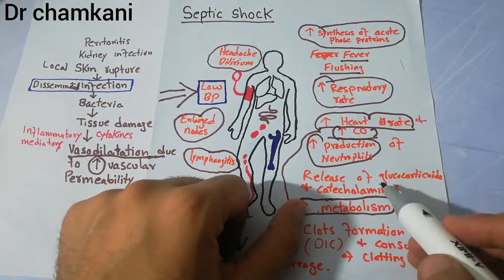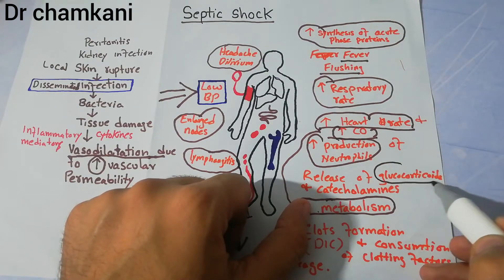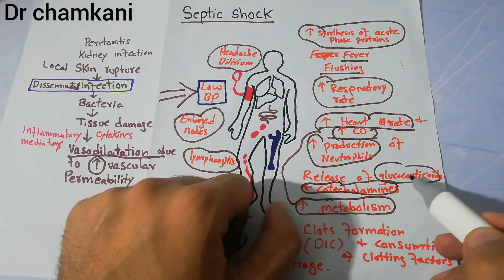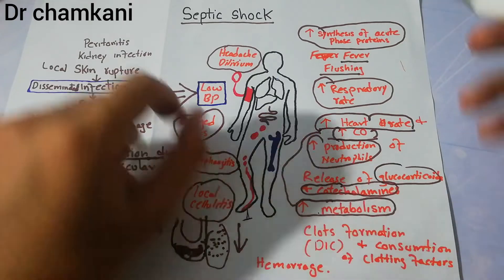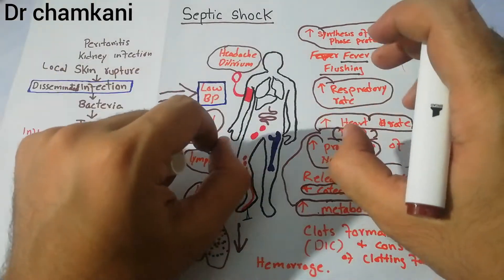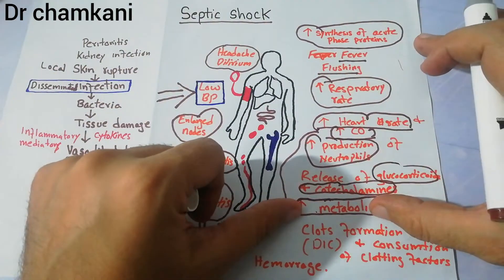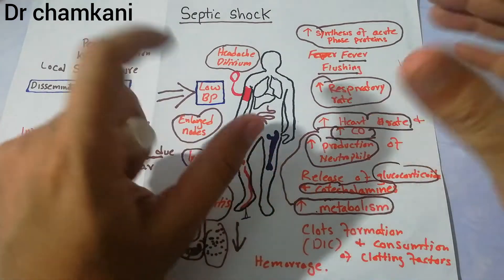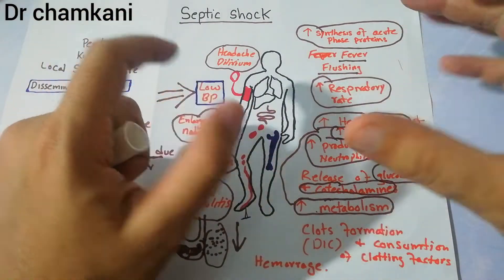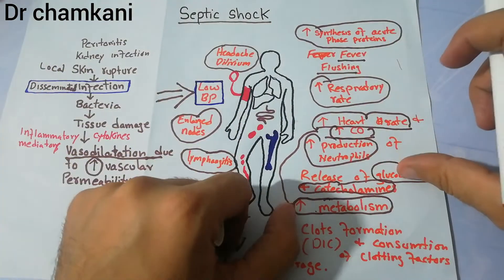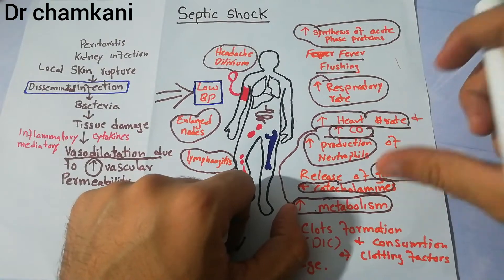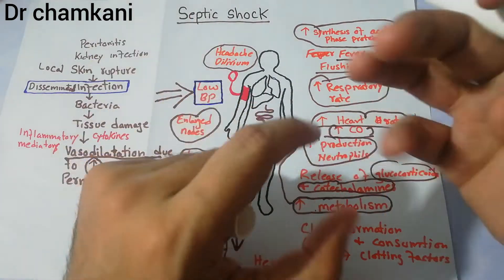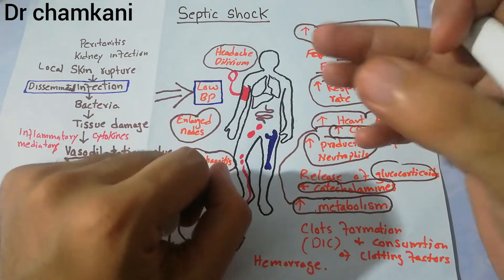There is a lot of production of glucocorticoids and catecholamines in septic shock. There is increased metabolism, and to cope with this metabolic stress, the adrenals release glucocorticoids and catecholamines, which help the body to manage the stress response.